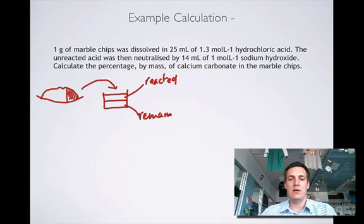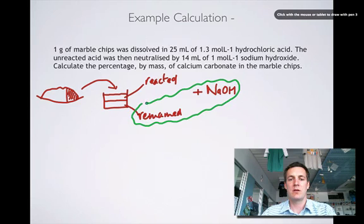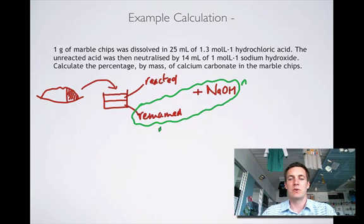And then after we did this reaction, we added sodium hydroxide. And why did we do that? Well, because the unreacted acid, that is the one that remained, that reacted with this sodium hydroxide. So by hopefully knowing how much sodium hydroxide we had, we'll be able to relate that to the number of moles of acid that we had. And if we know the total number of moles of acid that we had here, then we can take away the amount that remained from that to find the amount that reacted. So then we'll know the number of moles that reacted. And then we'll know the number of moles of calcium carbonate that were in the marble chips.